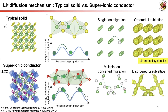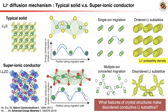Comparing lithium superionic conductors with typical solids, the key features include split lithium sites within a short distance, which correspond to the large elliptical lithium distribution observed in MD simulations and neutron nuclear density maps. We call this enlarged lithium site a critical feature of superionic conductors. The question is: what features of crystal structures can lead to a disordered conductive lithium sublattice?